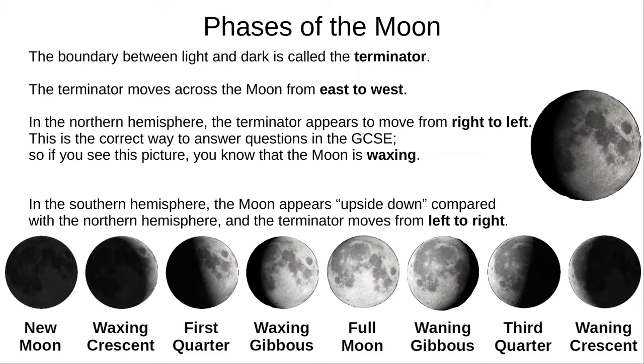In the southern hemisphere, this is reversed. The Moon appears upside down, and the Terminator appears to move from left to right. In the GCSE, a UK exam, the northern hemisphere answer is the correct one.